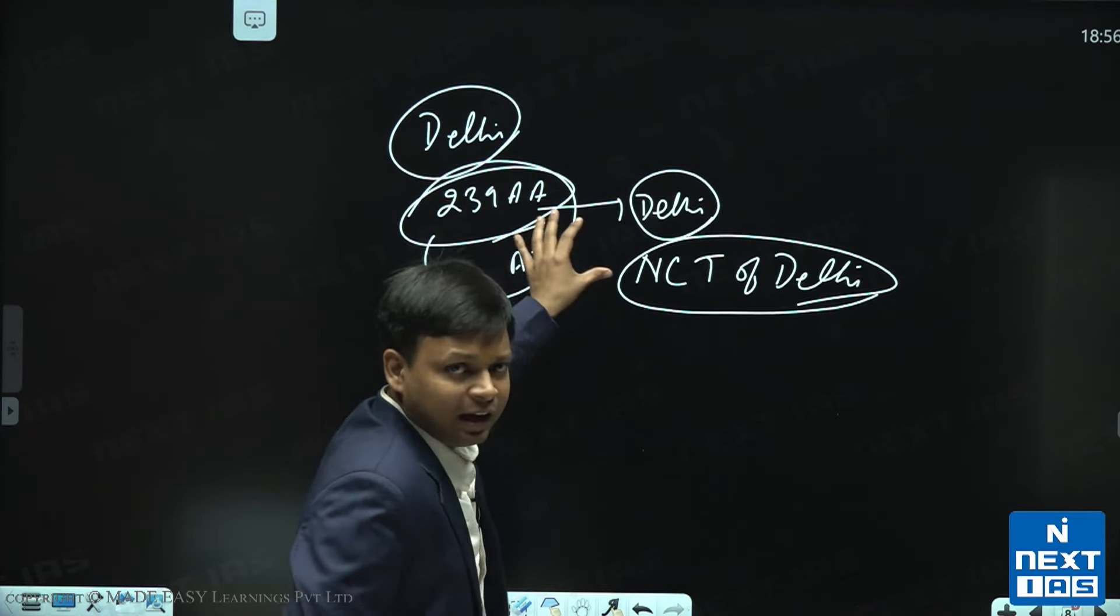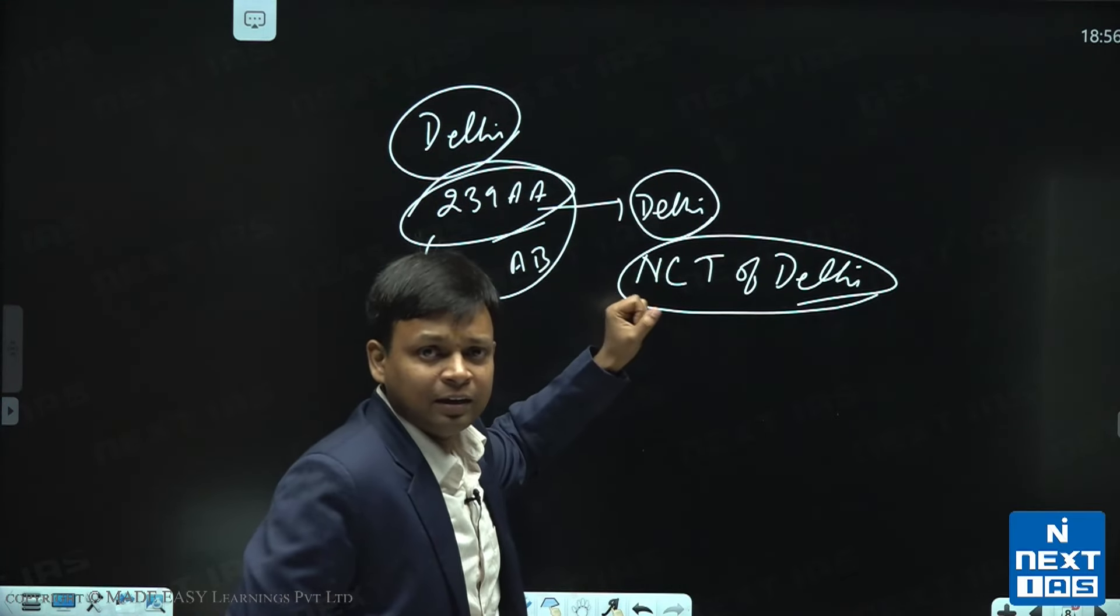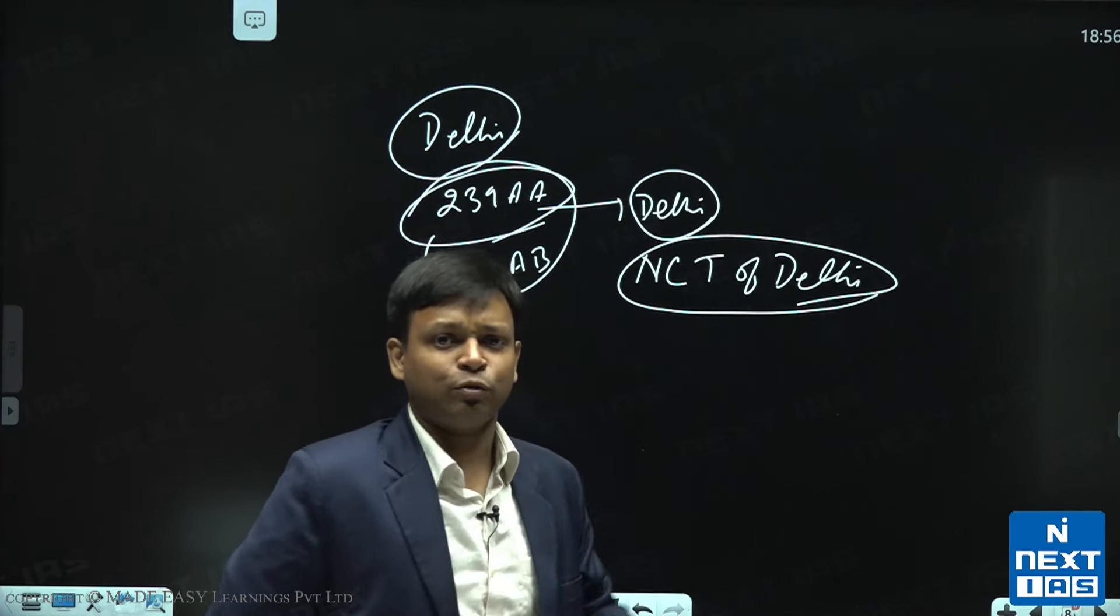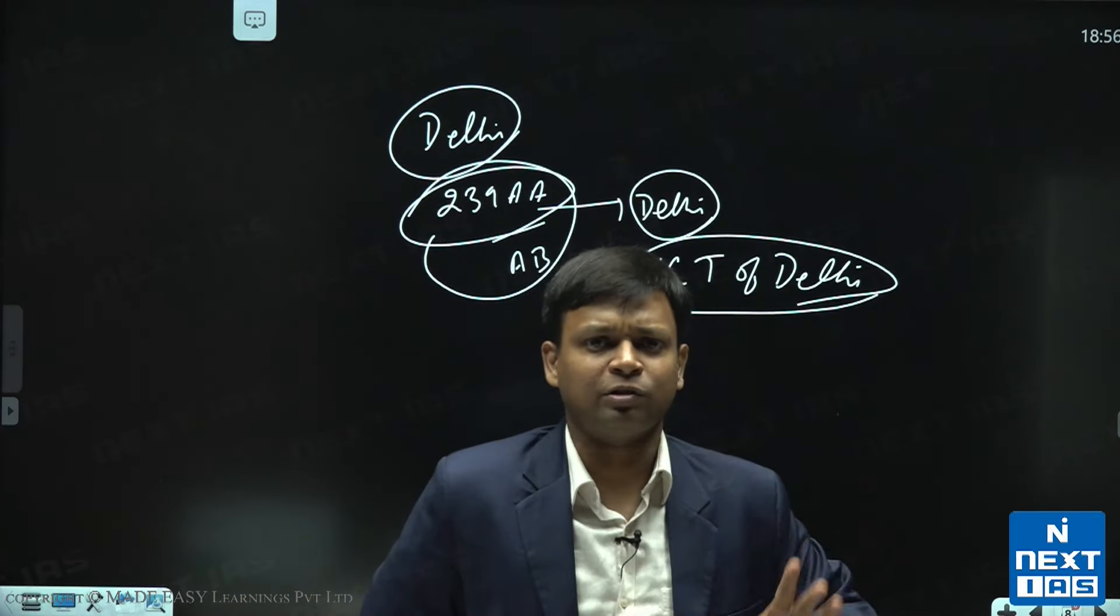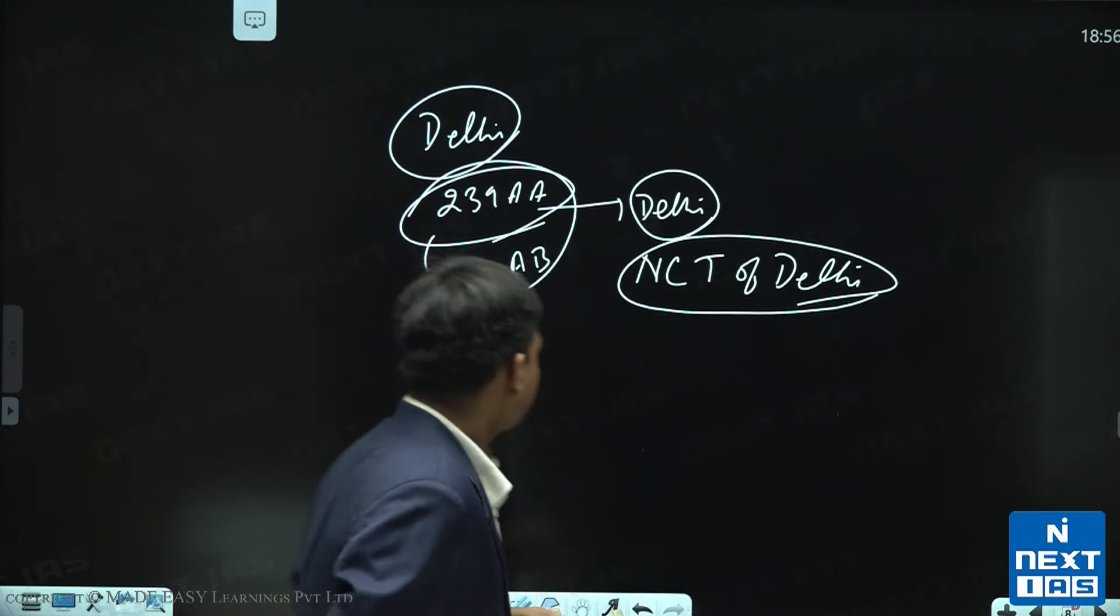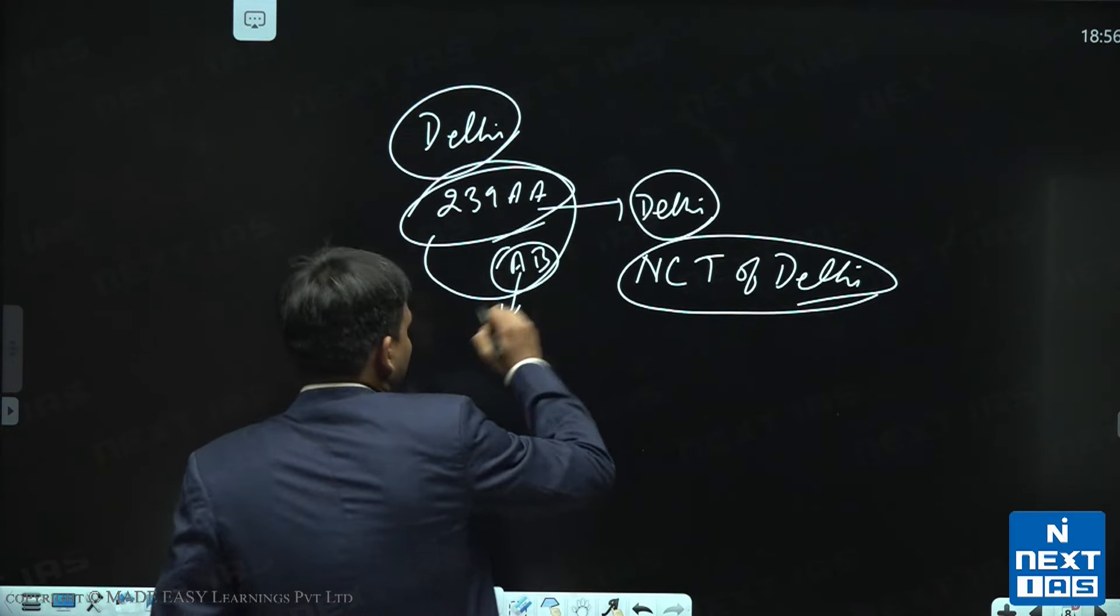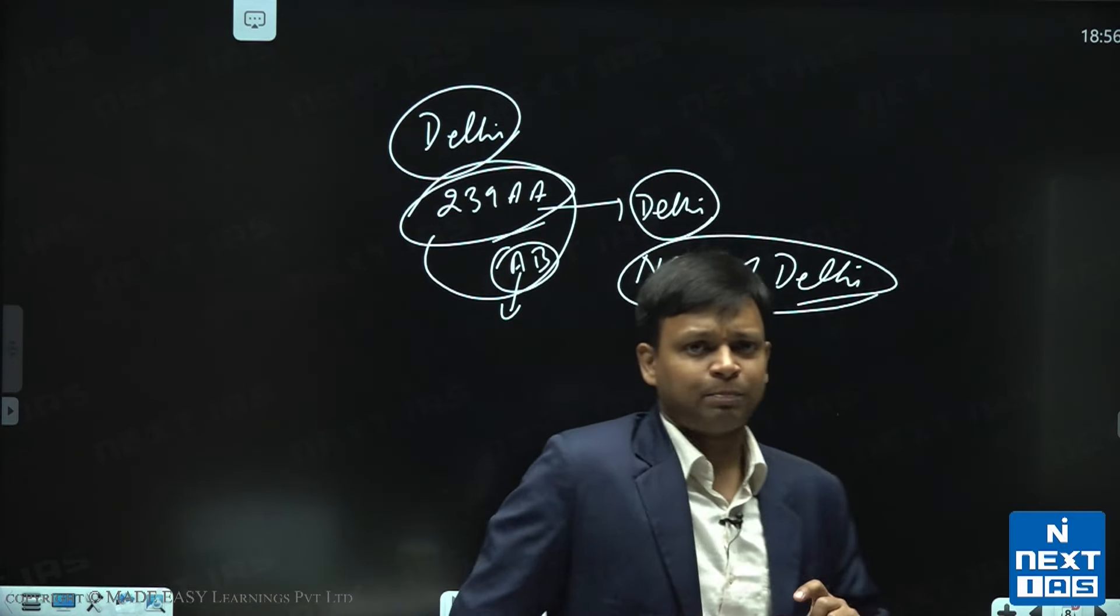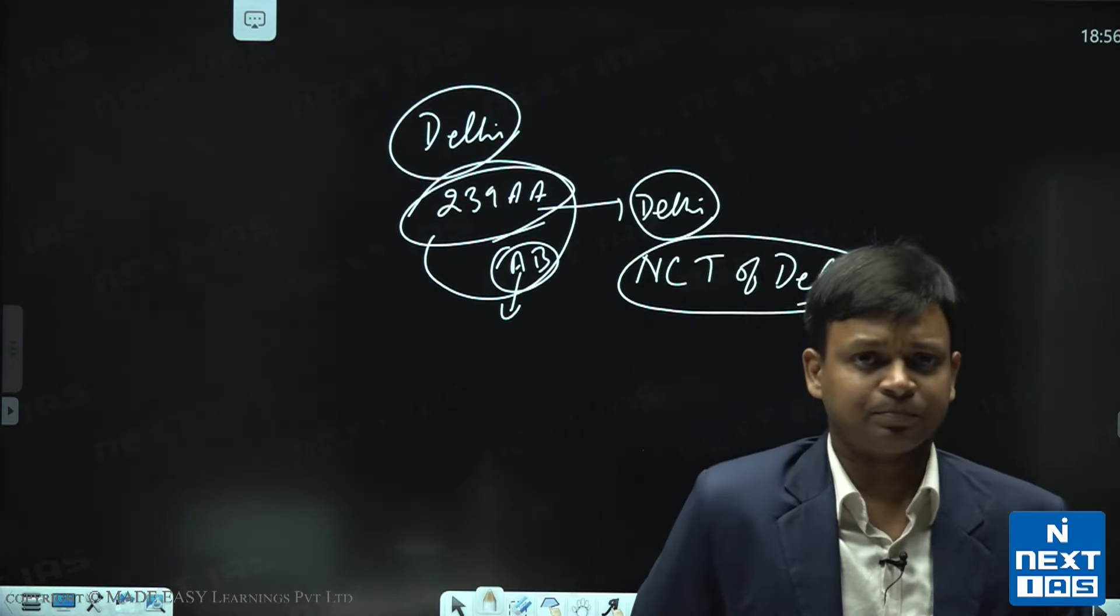Article 239 AA is like a mini constitution for Delhi. कैसे government बनेगी, क्या powers होंगे, क्या subjects होंगे, वो सारी चीज़े Article 239 AA में है. And Article 239 AB, it talks about the power to issue an ordinance in Delhi.